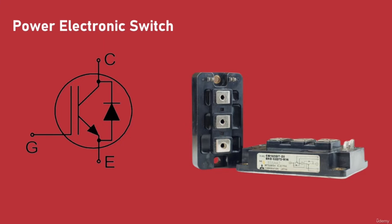In other words, they are able to turn on and off within half a microsecond. The newer silicon carbide or gallium nitride based switches turn on and off even faster, within tens of nanoseconds. In this particular IGBT switch, an antiparallel diode is included that allows reverse currents.